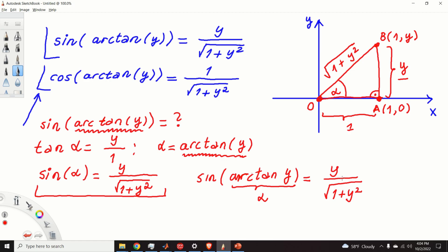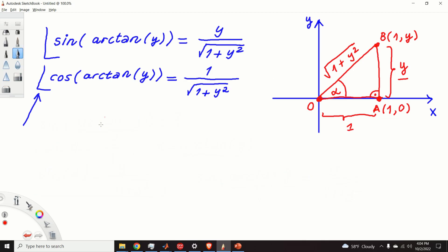It's very elegant. It's very easy, once you step out of the box and approach this problem from a geometrical perspective. So, let us try to solve the second problem. The second problem is to find cos(arctan(y)). Again, we follow the same approach.